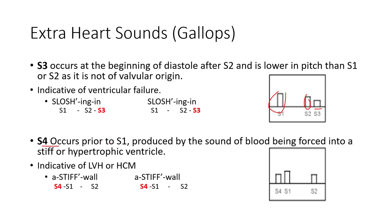S4 will occur right before S1 - right at the beginning of systole, prior to systole. This is due to turbulent blood in the left ventricle because it's stiff and hypertrophied. Remember, before the ventricles contract the atria contract and pump that little bit of extra 20% into the ventricle - that atrial kick. If you get a very stiff or hypertrophied ventricle, it's going to create some turbulence and you get an extra sound. We call that an S4 sound.